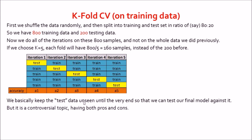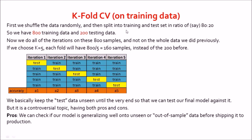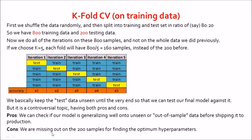This is a pretty controversial and complicated topic with both pros and cons. The pros: we can check if a model generalizes well onto out-of-sample data before shipping it to production. The cons: we are missing out on 200 samples when finding the optimum hyperparameters, since we are working on only 800 samples. If you have anything to share about which mode of working is preferred, please share in the comments below — I will be happy to have a good discussion.